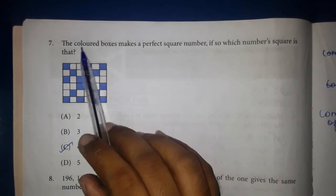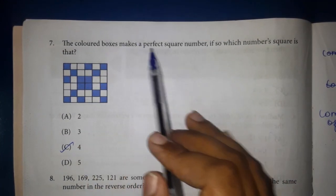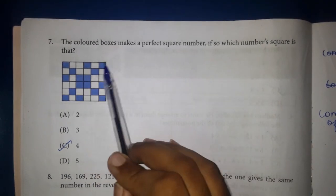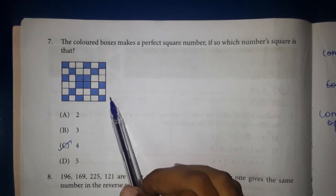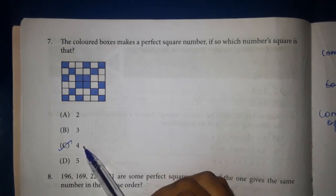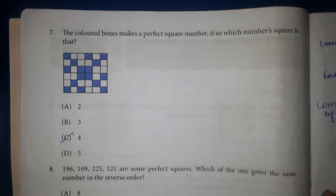7th one. The colored boxes make a perfect square number. If so, which number square is that? 1st color box. 16 is a square number. 4 is a square number. Answer option C. 4.